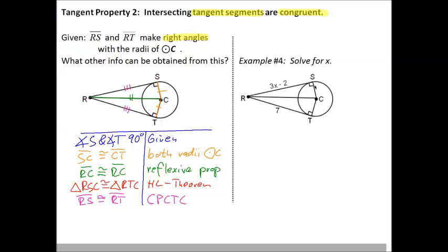And we have two tangents because of the right angles there. The tangents are perpendicular to our radii, and therefore segment RS is congruent to segment RT. And that means that 3X minus 2 is equal to 7.